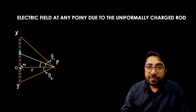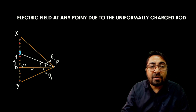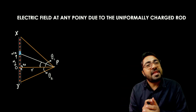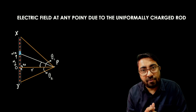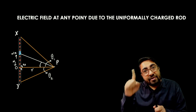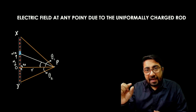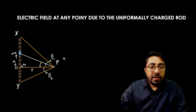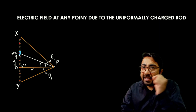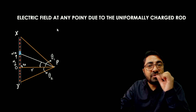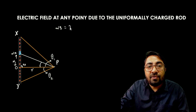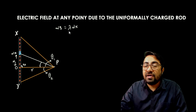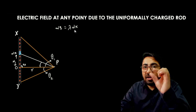Let us consider from point O at some X distance, we have a DX element. Because here we have a general expression of the charge, this is the small charge dq, which is equal to lambda into dx. Because linear charge density equals charge upon length, this small charge dq equals lambda — the linear charge density — times the small element of length.